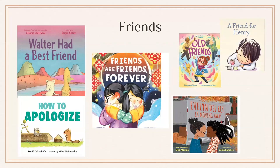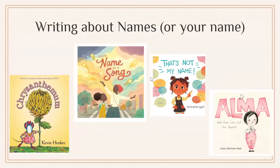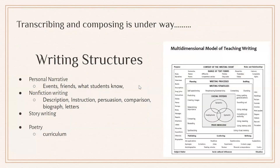Some books are all about friends — great for when we're writing about friends, showing how friends interact and how we interact with a friend. There are also books about names if students are going to write all about their name. We also want students to understand writing structures. Especially in grade two and three, we're looking at personal narratives, nonfiction writing, story writing, and even poetry — all of these are listed in our curriculum.